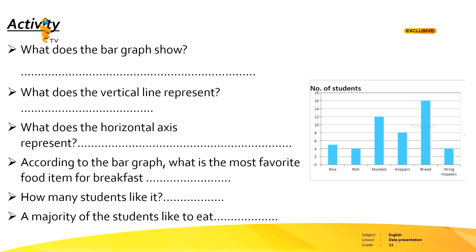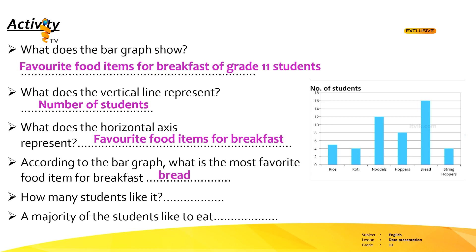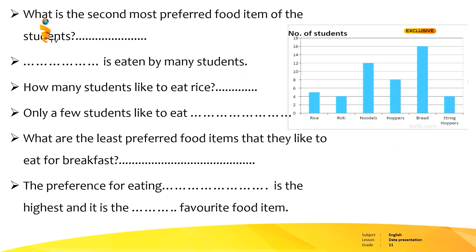Shall we see Activity 1? You have to read the question and write the answer. What does the bar graph show? Favorite food items for breakfast in the grade 11 class of a school. What does the vertical line represent? Number of students. What does the horizontal axis represent? Favorite food items for breakfast. According to the bar graph, what is the most favorite food item for breakfast? Bread. How many students like it? 16. A majority of students like to eat bread. What is the second preferred food item? Noodles. Noodles is eaten by many students.